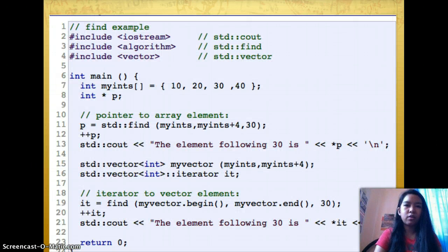Here is my example of find. Include iostream for std::cout, include algorithm for std::find_if, include vector for std::vector. My int main: int myints equals 10, 20, 30, 40.